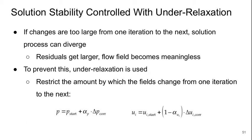We can control the stability of our solution with something called under-relaxation. Basically, if the changes are too large from one iteration to the next, the solution process can be unstable and can diverge and basically yield garbage. The residuals get larger, the flow field becomes completely meaningless. To prevent this, we use under-relaxation.